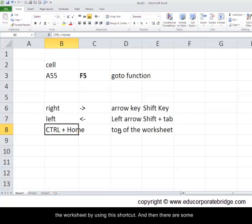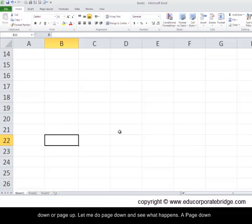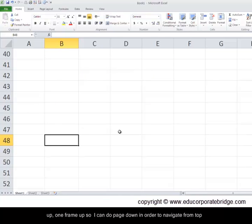And then there are some navigation shortcuts which are really useful. These would be page down or page up. Let me do a page down and see what happens. A page down means there's a clear change in the frame of the worksheet. I have been taken one frame down in the Excel area. Likewise let me do a page up. One frame up. So I can do page down in order to navigate from top to bottom and page up.